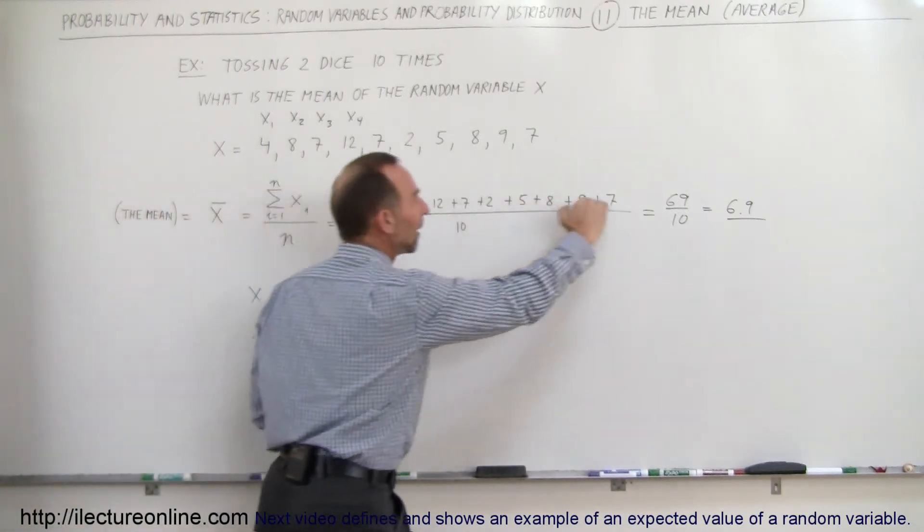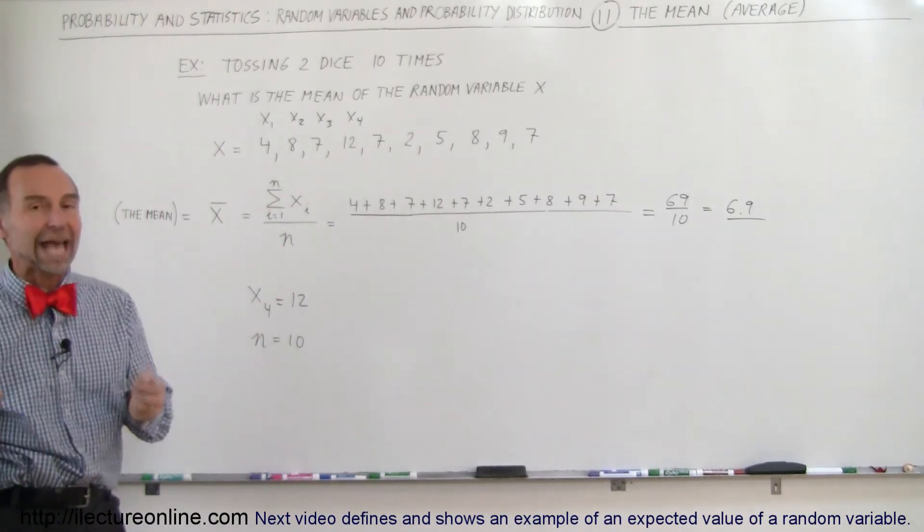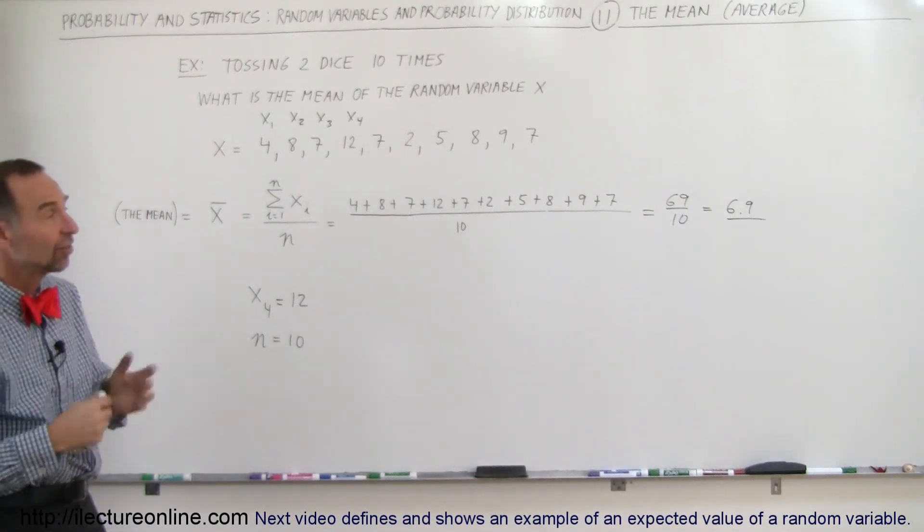It's simply adding up all the values that we got, divided by the total number of tosses, and that gives us the average value per toss, which in this case is 6.9.